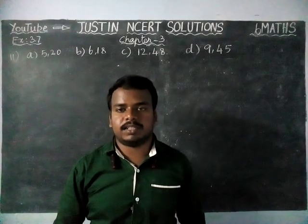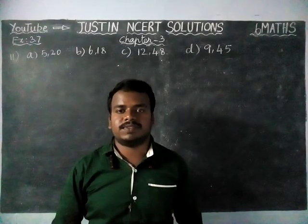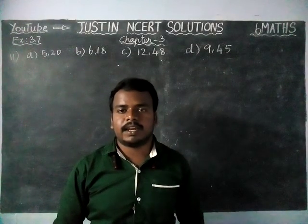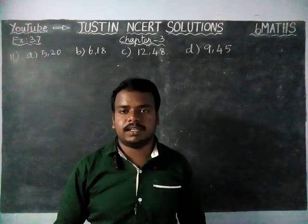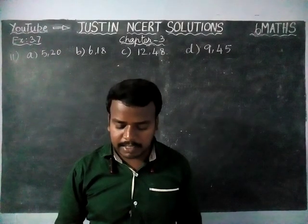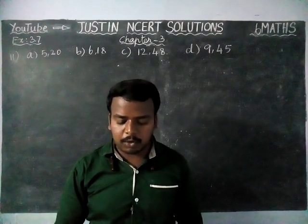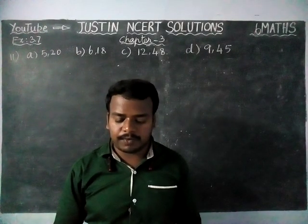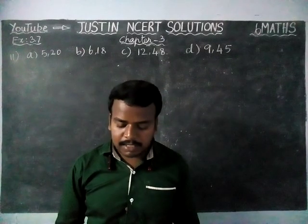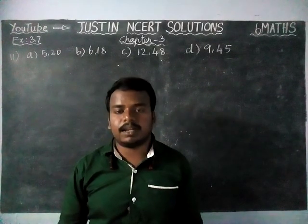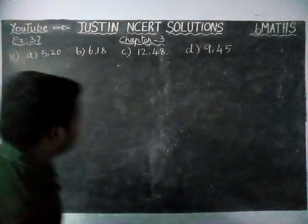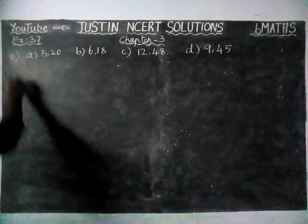Hi students, welcome to Justine NCIT Solutions. In this video, we are going to see Class 6 Maths, Chapter 3, Exercise 3.7, 11th posting. Here, they have given 4 parts. We have to find LCM. In this, the smaller number is a factor of the other number. Now we are going to check it.